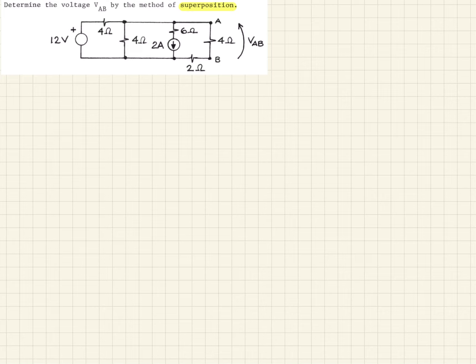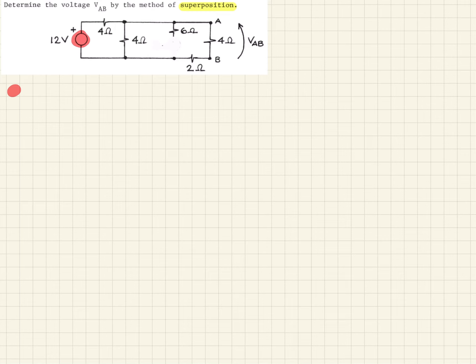For the first condition, we're going to consider the 12-volt source. Remember, we short all other voltage sources and open-circuit other current sources. So in this case, we open-circuit the current source, which takes out that entire leg of the circuit because no current can flow through it. This is what we're left with.